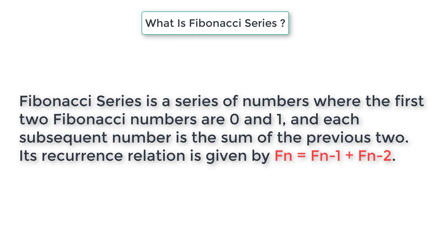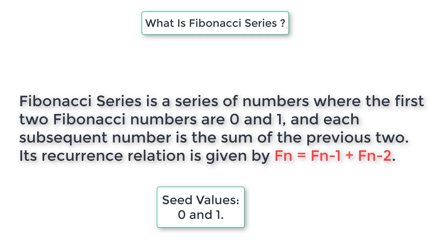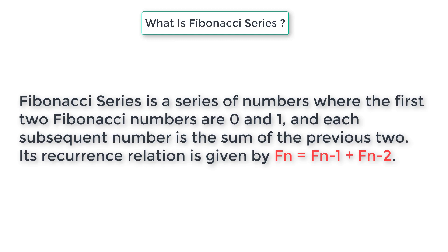The Fibonacci series is a series of numbers where the first two Fibonacci numbers are 0 and 1. Each subsequent number is the sum of the previous two. Its recurrence relation is given by F(n) = F(n-1) + F(n-2), where n means the nth term.